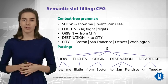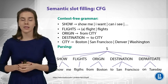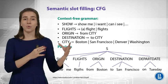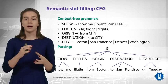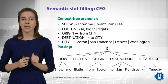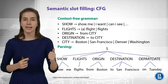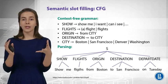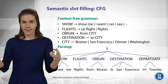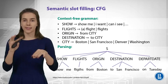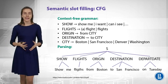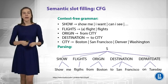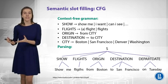This slide is about context-free grammars, which is a rule-based approach. Context-free grammars show you what would be the rules to produce some words. For example, the non-terminal 'show' can produce words like 'show me' or 'can I see.' Some other words — for example, the 'origin' non-terminal can produce 'from city,' and the 'city' non-terminal can then produce some specific cities from a list. When you have this context-free grammar, you can use it to parse your data and identify what non-terminals created certain words.